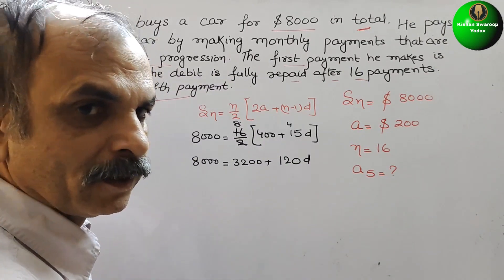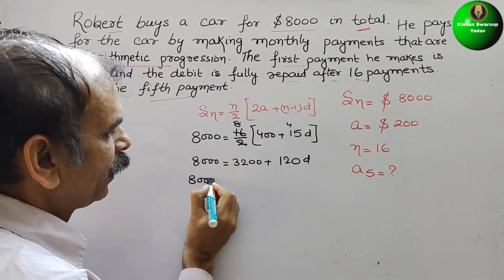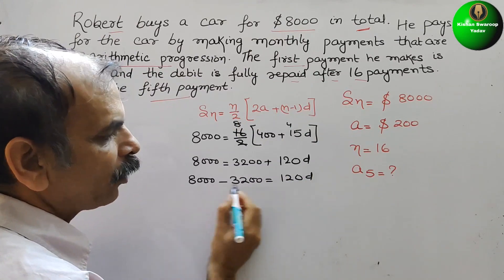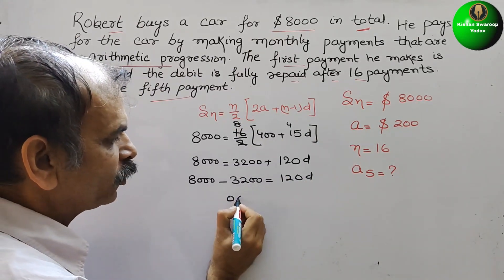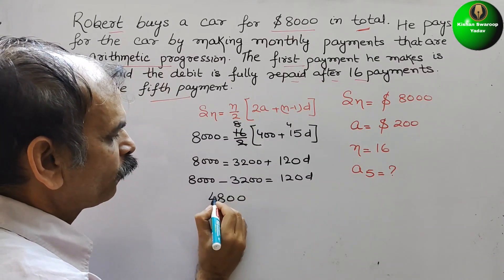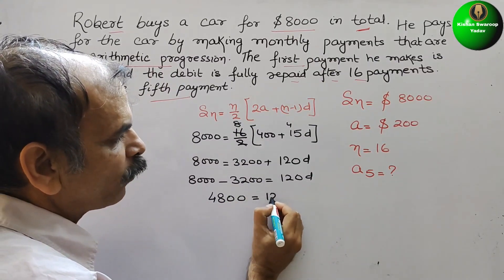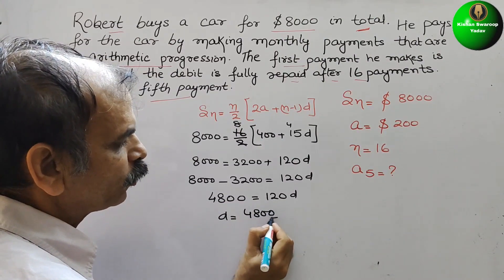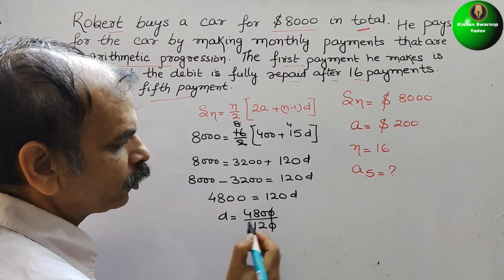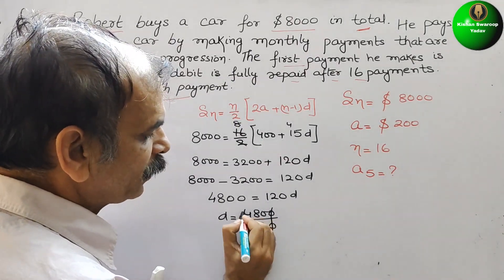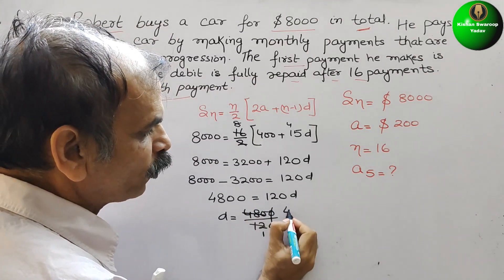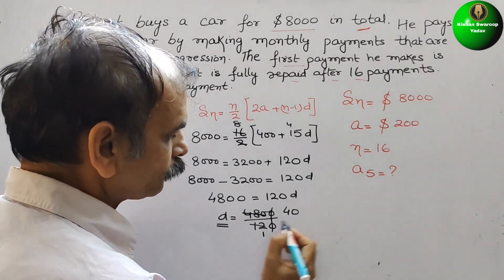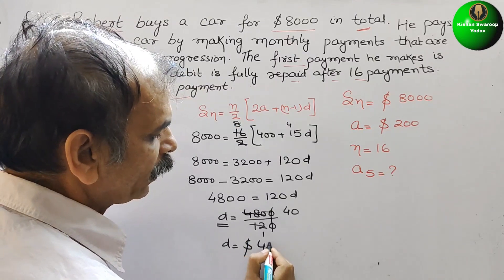Now bring this to this side. It will be 8000 minus 3200 is equal to 120D. Now subtract it. We will get 4800 equal to 120D. So what is your D? D is equal to 4800 by 120. Reducing: 48 divided by 12 is 4, so the common difference D is equal to $40.